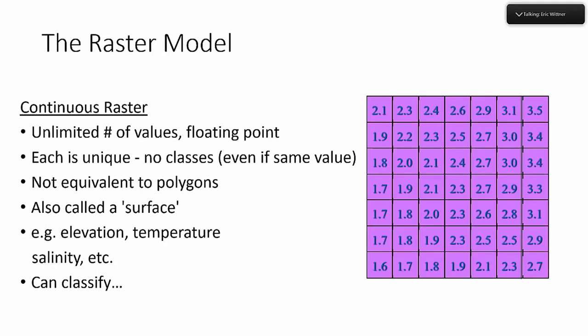Continuous rasters have an unlimited number of values, typically floating point. Each cell is unique — there are no classes, so cells don't belong to a common grouping, though they might share the same values. Two places with the same elevation are not part of the same class. You'll also hear raster models called surfaces. Great examples are elevation, temperature, and salinity. You can classify rasters in a variety of ways — equal interval, quantile, et cetera — especially for cartographic and display purposes. We'll go through those as we go through the course.